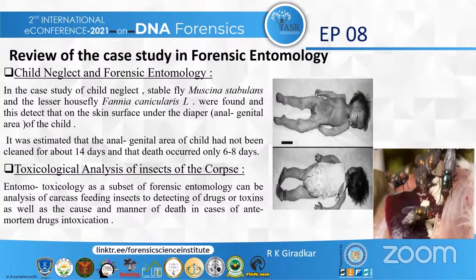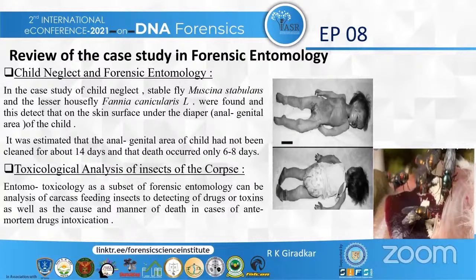The first case study in forensic entomology is child neglect. On the skin surface, third instar larvae of the false stable fly Muscina stabulans and the lesser house fly Fannia canicularis were found. From the development times of the flies, it was estimated that the anal-genital area of the child had not been cleaned for about 14 days, and that death occurred only 6 to 8 days prior to discovery of the body.